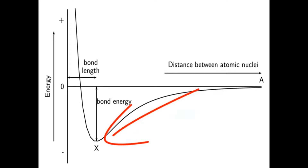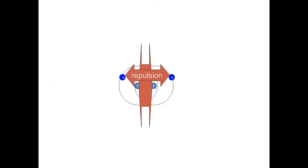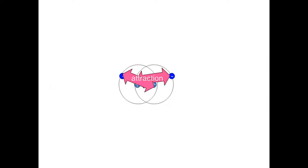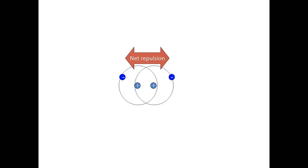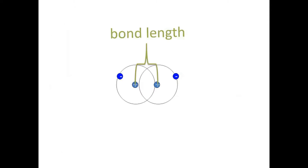As they move together, their chemical potential energy is converted to kinetic energy and they get less and less chemical potential energy as they get closer and closer. Now if you force two hydrogen atoms together even closer than their bond length — or if, as they're moving together, their momentum carries them beyond their bond length — then the repulsion forces become stronger than the attraction forces, so there's a net repulsion. They can then do work on one another pushing one another apart, converting chemical potential energy into kinetic energy, and they will settle at their bond length where the forces of attraction and repulsion are equal and they are stable.